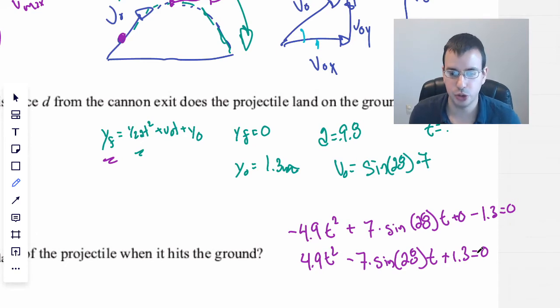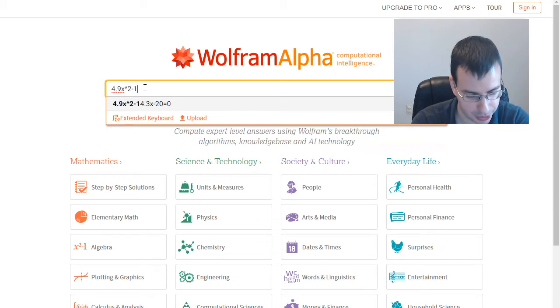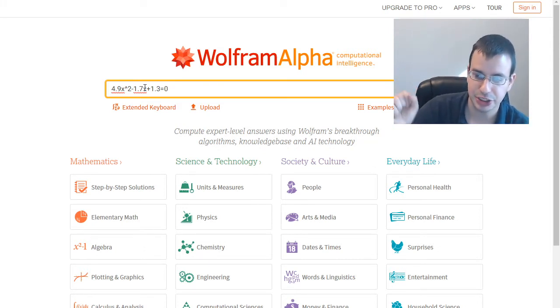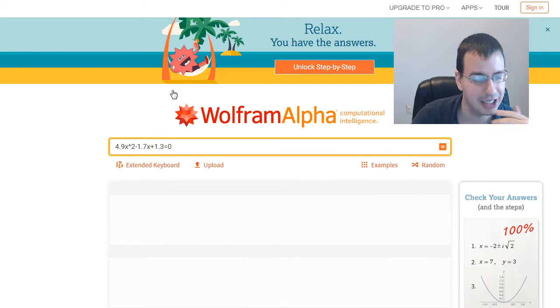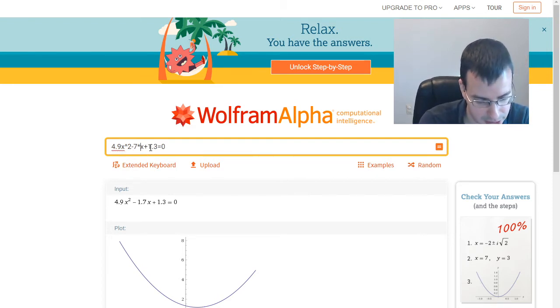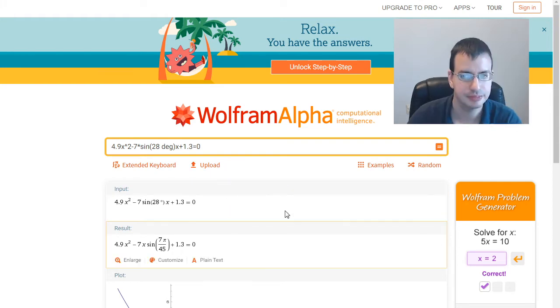So this is probably going to give us a quadratic, which I might just go to Wolfram for. So this gives us an equation: negative 4.9t squared plus 7 times sine of 28 times t plus 1.3 equals zero. I'll multiply everything by negative one just so that I'm more positive. I like the first term in my quadratic to be positive. And then from this point here, we go over to Wolfram.